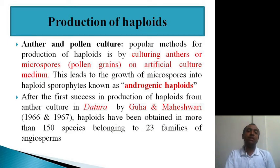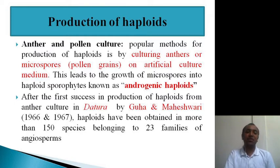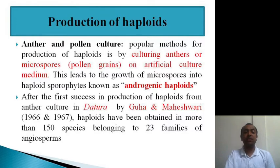In anther culture, anthers or microspores are cultured on an artificially defined medium. This leads to the growth of microspores into haploid sporophytes known as androgenic haploids. This was first achieved in Datura by Guha and Maheshwari in 1966 and 1967.